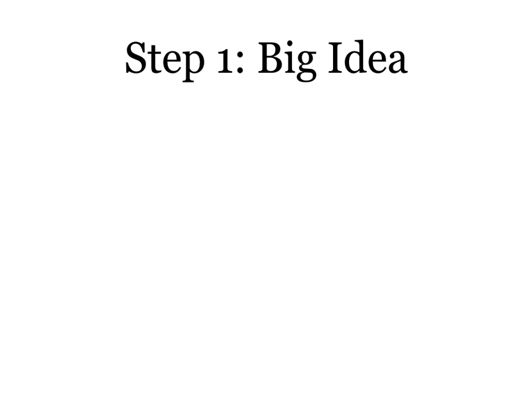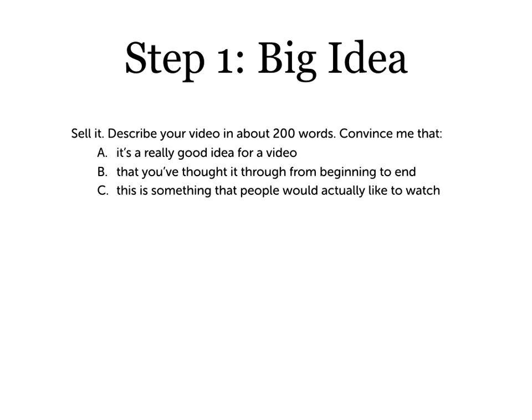The first step — the big idea — is the easiest stage of the project in terms of any technical production. All you're going to do is write this in a Word document, save it as a PDF, and upload it. But obviously it's a pretty important step. This is coming up with the idea and describing it in a way that sells it to me. Think of me as the person who would be deciding whether this gets to be produced or not. You need to sell your idea to me, and more importantly, I want you to convince me that you've thought this all the way through.